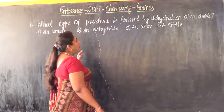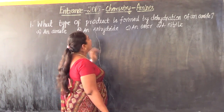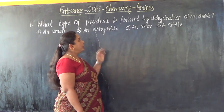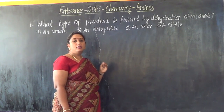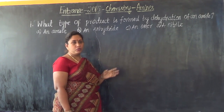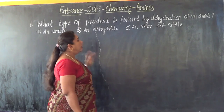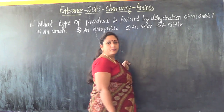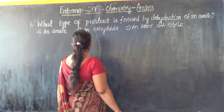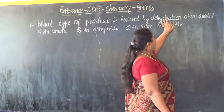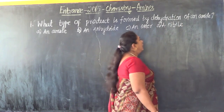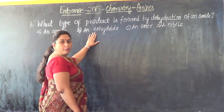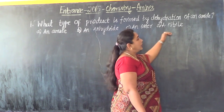Let us focus on a few important entrance questions for the 2015 entrance examination in chemistry from the concept of amines — organic compounds containing nitrogen. The question asks: what type of product is formed by dehydration of an amide? We have four options: is it an amine, an anhydride, an ester, or a nitrile?